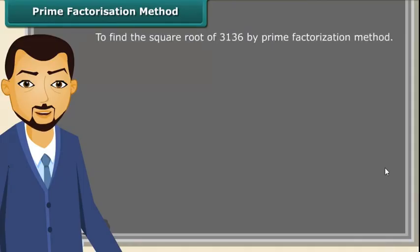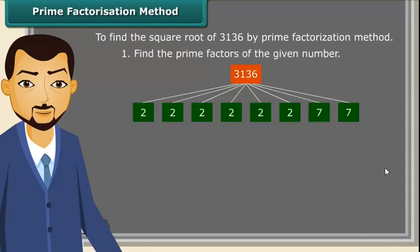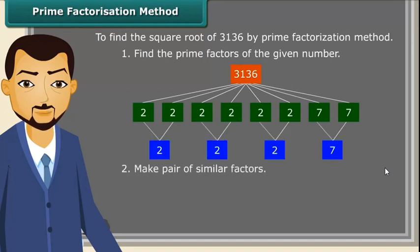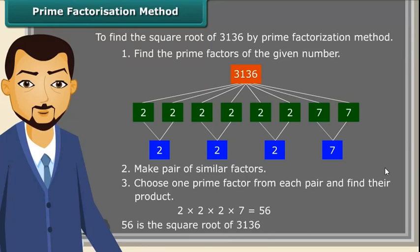Now we will try to find the square root of a number by the prime factorization method. First, find the prime factors of the given number. Next, make pairs of similar factors. Then choose one prime factor from each pair and find their product. The product thus obtained is the square root of the given number.